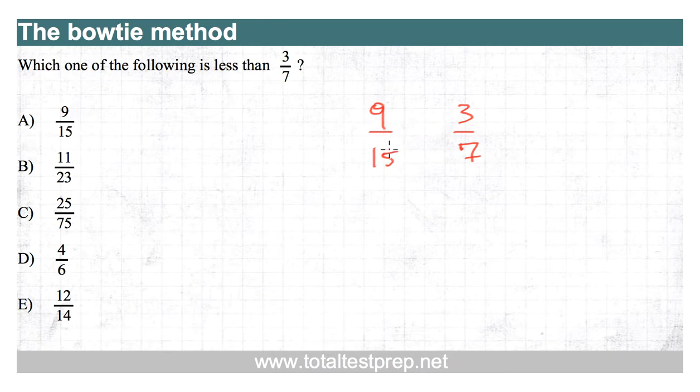So the way the bowtie method works is you essentially multiply the denominator on the bottom left with the numerator on the top right. So we're multiplying diagonally. And we write the product up top. Fifteen times three is 45. We write that above the numerator.